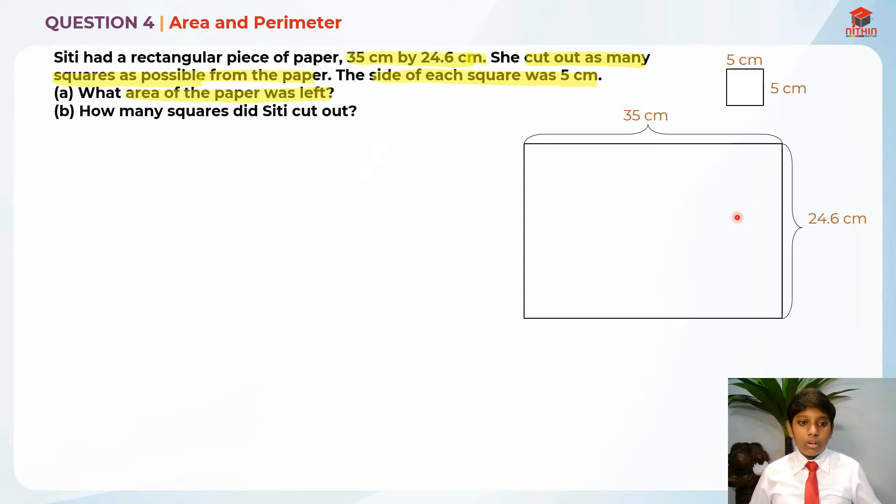What I'm going to do now is to find the number of squares on the length and the number of squares on the breadth. So number of squares on the length is basically 35 divided by 5, which is equal to 7. After that, I'm going to draw seven squares here. So 1, 2, 3, 4, 5, 6, and 7.